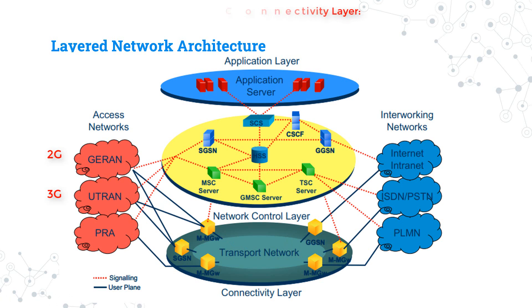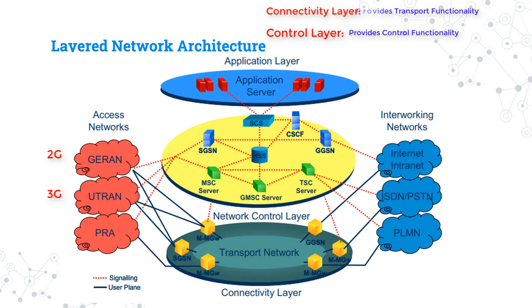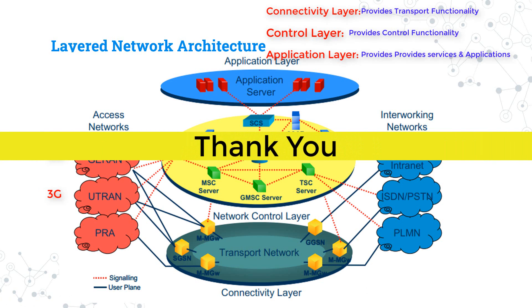In brief: the connectivity layer is the layer which provides transport functionality; the key nodes are the media gateways and GGSN. The control layer provides control functionality and consists of various control servers that control the media gateways; the key nodes are MSC, HLR, and SGSN. The services or application layer provides services and applications via application servers and service capability servers. We will discuss the role of each node in the upcoming chapters. I hope at the end of this lecture you are now able to explain the concept of vertical and horizontal networks and the differences between them. See you in the next chapter!